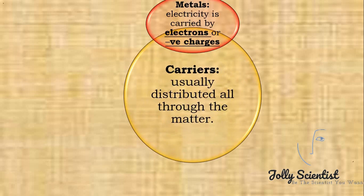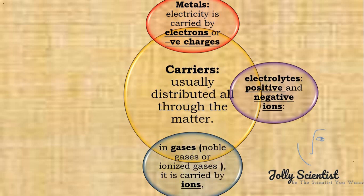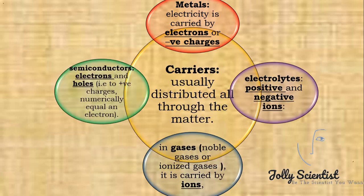In metals, they are carried by electrons. In electrolytes, they are carried by positive and negative ions. In gases, such as local gases or ionized gases, they are carried by ions. In semiconductors, electricity is carried by electrons and holes.